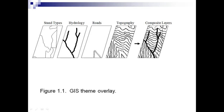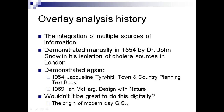In GIS, there are various maps and every map has a theme — electricity lines, water lines, routing algorithms. These various themes include stand types, hydrology, roads, topography, and composite layers that you can combine or use individually. The overlay analysis history — the integration of multiple sources of information — was demonstrated by Dr. John Snow in his isolation of cholera sources in London.